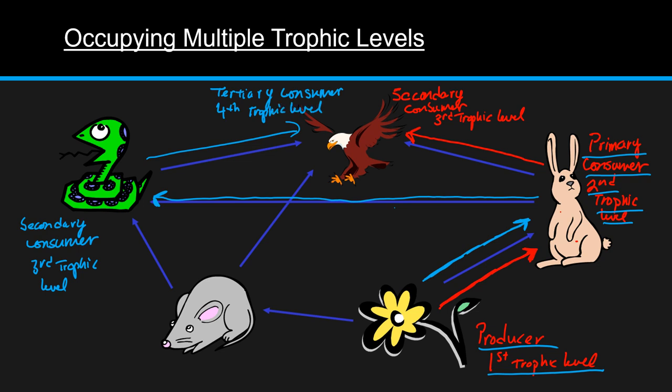This shows how organisms can occupy multiple trophic levels depending on what they're eating. And it really goes to show just how diverse these ecosystems are and how food webs are much more accurate than food chains. Because the hawk is not always going to be the tertiary consumer. It may play the role as a secondary consumer.